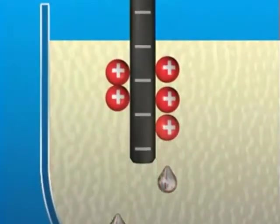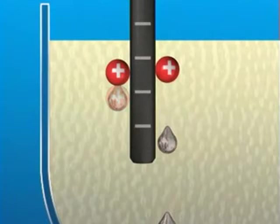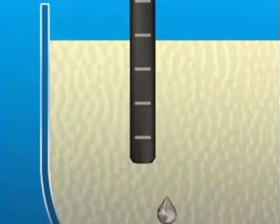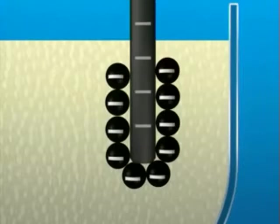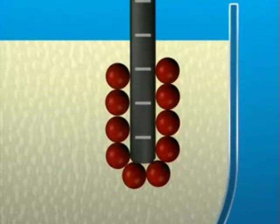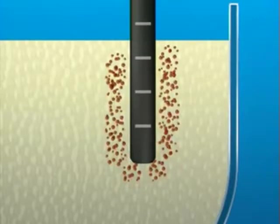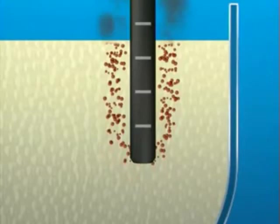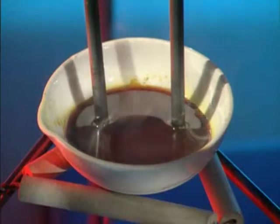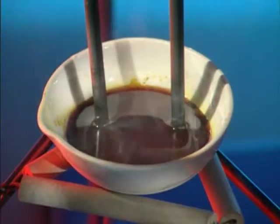Lead ions pick up electrons. They lose their positive charge and form lead atoms. Bromide ions give up electrons. They lose their negative charge and become bromine atoms. These form a gas. Electrolysis of lead bromide only works when the compound is molten. Why doesn't it work when the compound is solid?